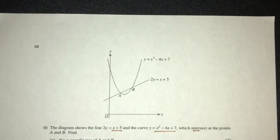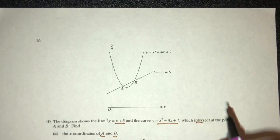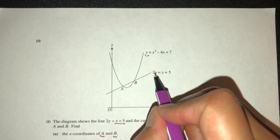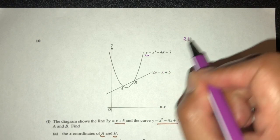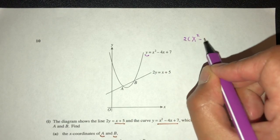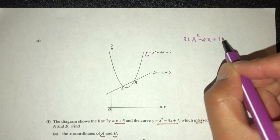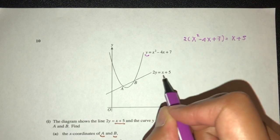So pretty easy, point of intersection we solve by using simultaneous equation. So here we have y, we can replace y in this. We have 2 times y, y is also x squared minus 4x plus 7, has to be x plus 5.